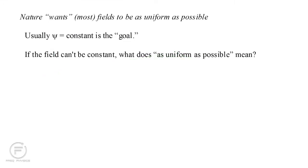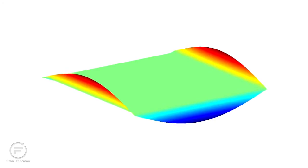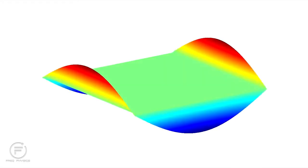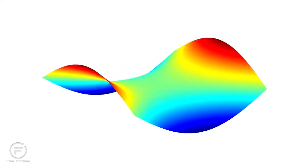But what if the field can't be constant? What then would as uniform as possible mean? Suppose we bend our wire rectangle into a curve. Rather than trying to stay flat, the soap film will relax into some smoothly curved shape.